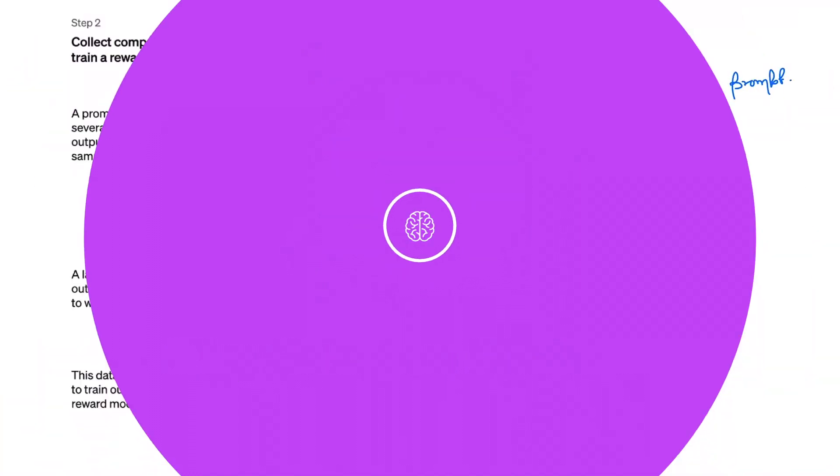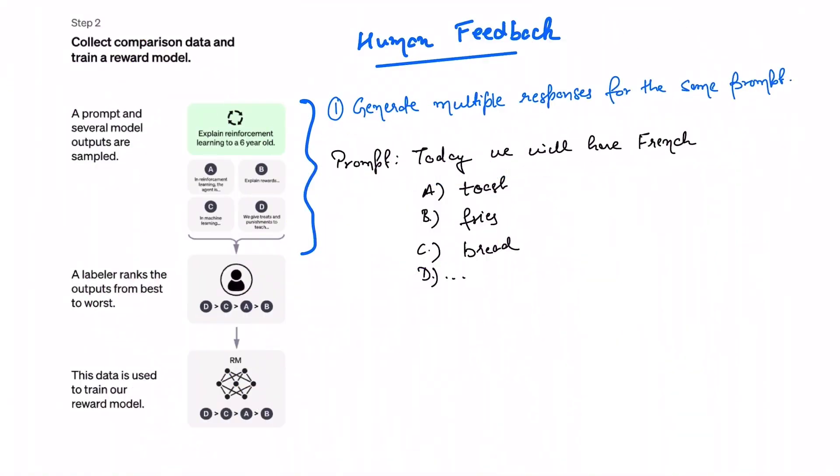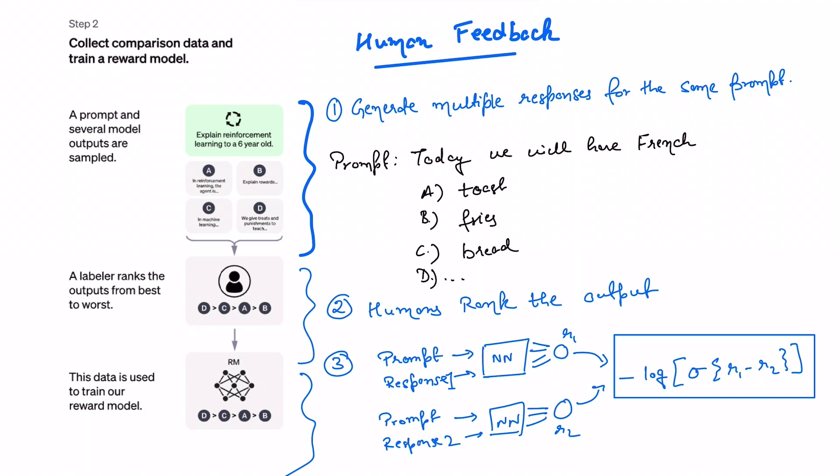So let's say we give this prompt to our fine-tuned supervised GPT from step one. The prompt is today we will have French and we ask the model to complete it. And let's say we give this prompt to the model four different times and generate four different outputs.